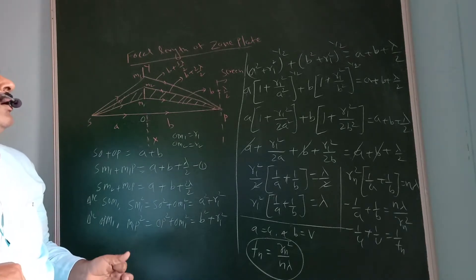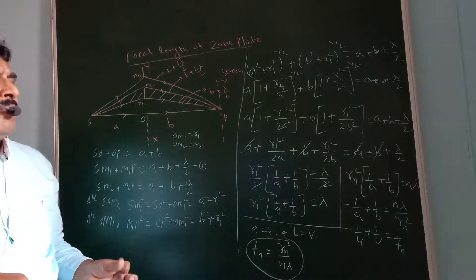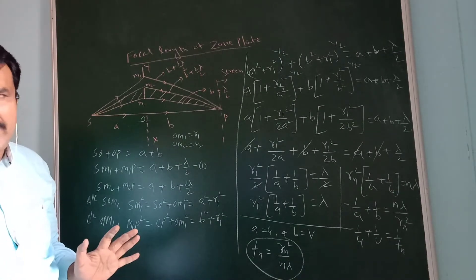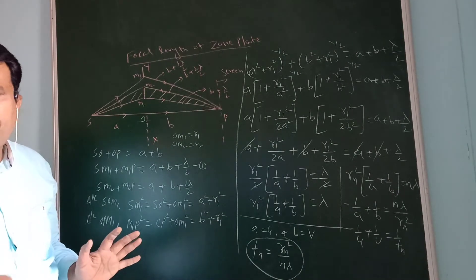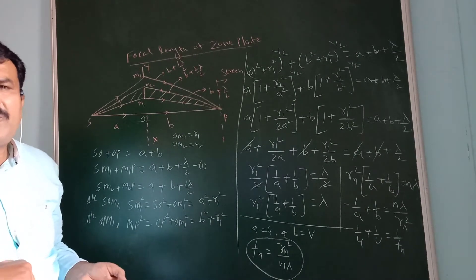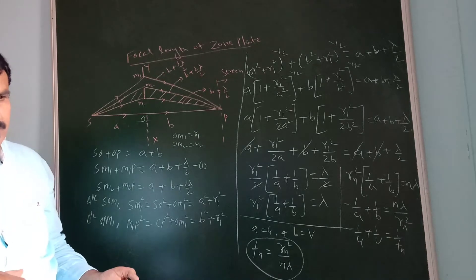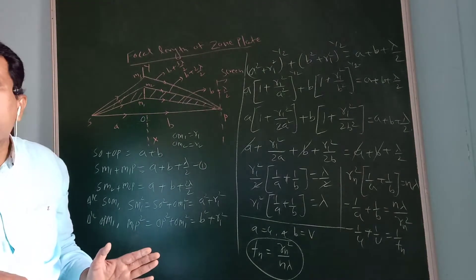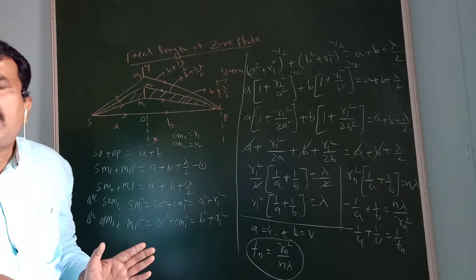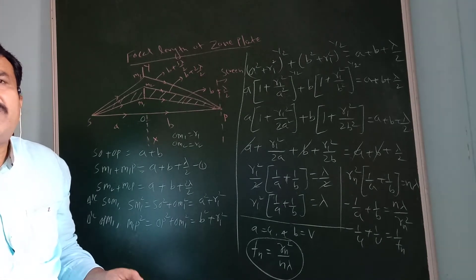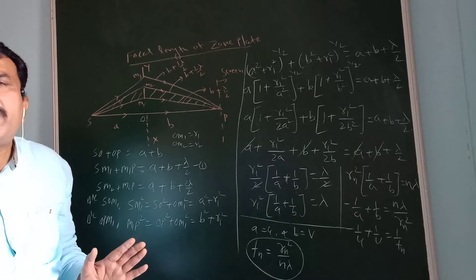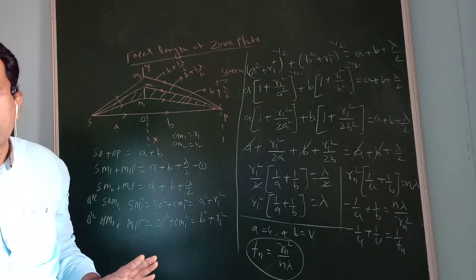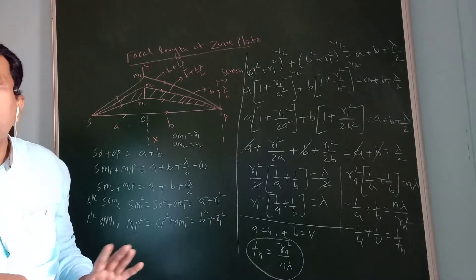We can derive the equation for focal length of the zone plate. We know the definition of a zone plate: the specially constructed screen in which light is obstructed in every alternate zone is called a zone plate.